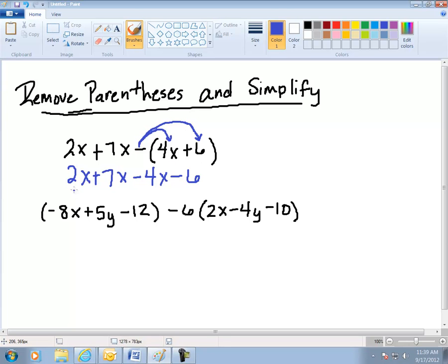And now from here I combine like terms. Remember I can combine terms as long as the variables look exactly alike. Here I have an x, here I have an x, here I have an x. 2x plus 7x gives me 9x but then take away 4x it becomes 5x. And then here I have the negative 6.